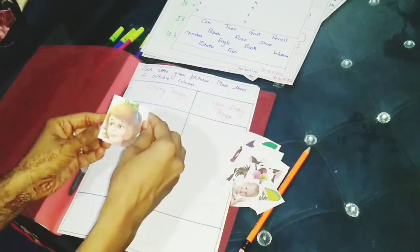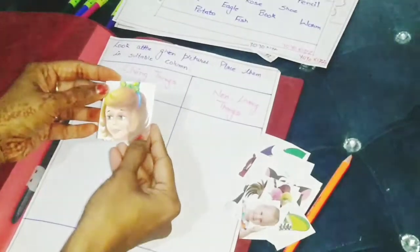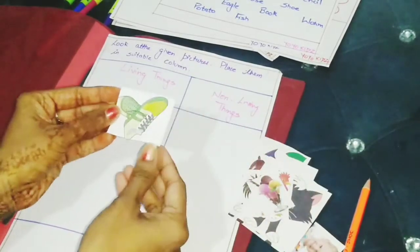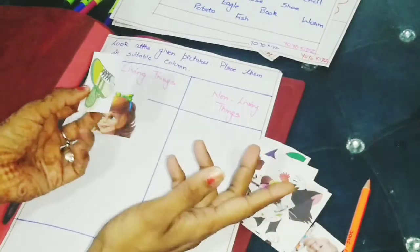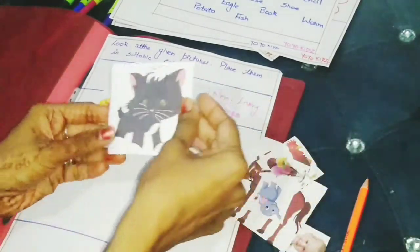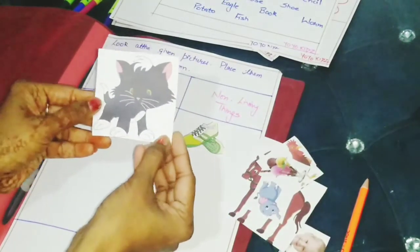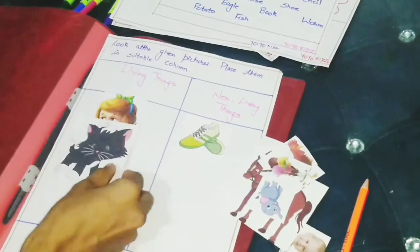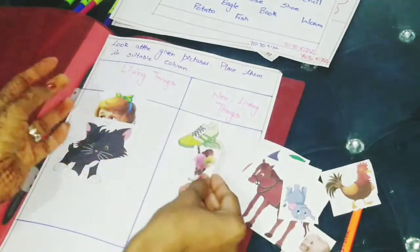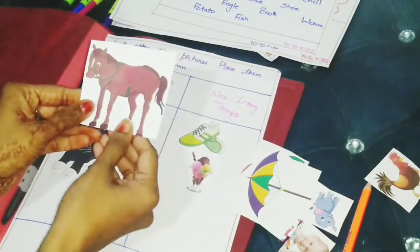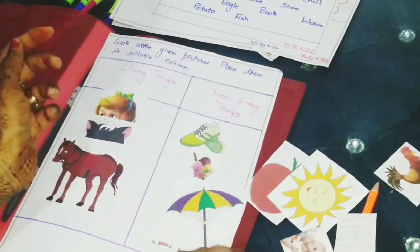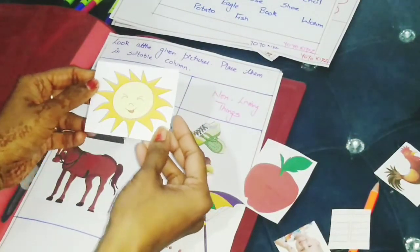Now let's check it one by one. Now what is this? This is a girl. Girl is a living thing. So we will place it here. What is this? Shoes. Very good. Do shoes grow by themselves? No. Do they walk by themselves? No. So it is a non-living thing. What is this children? Very good. This is a cat. Cat is a living thing. Next we have ice cream. Ice cream is a non-living thing. Horse. Horse is a living thing. Umbrella. Umbrella is a non-living thing. Sun. Sun is a non-living thing.